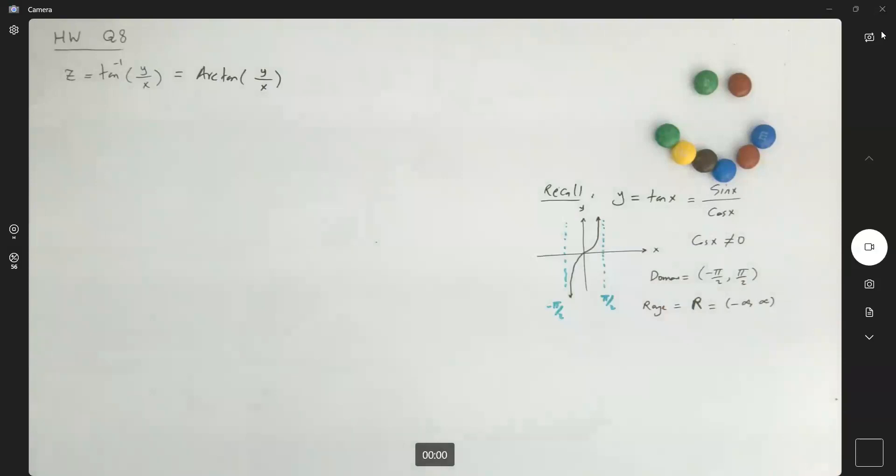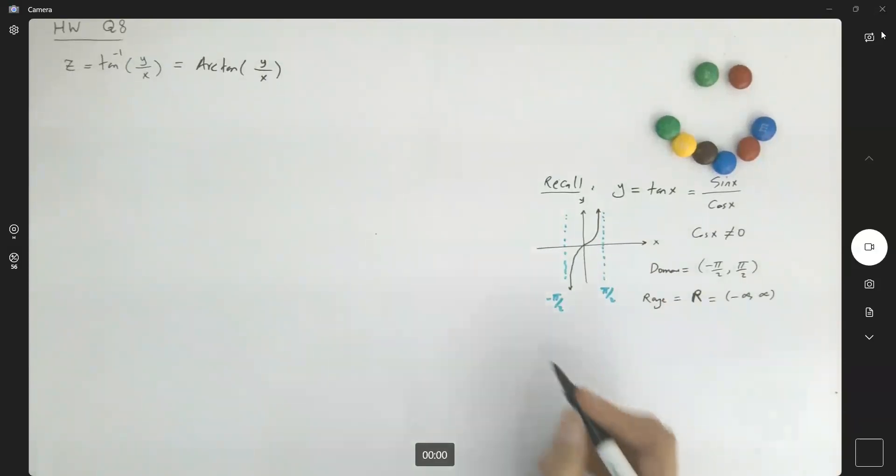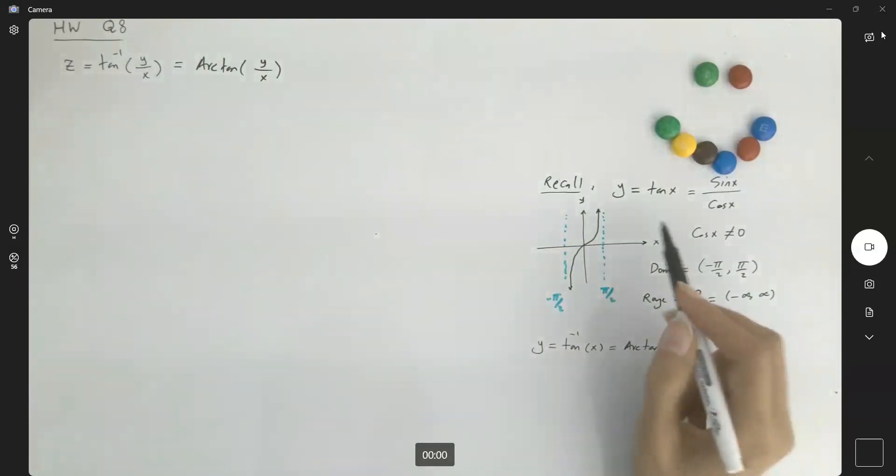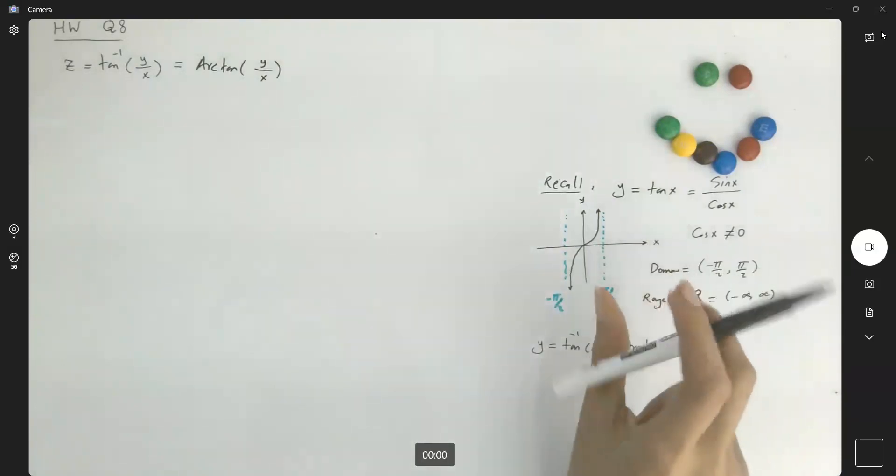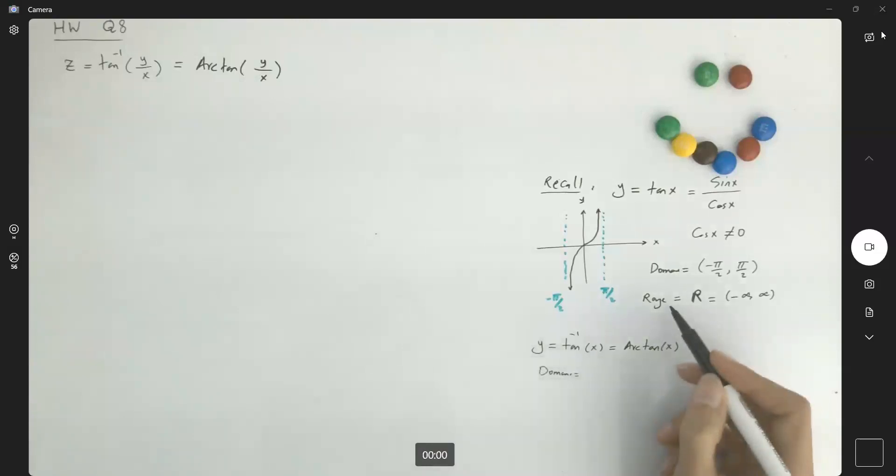The way that we define the inverse tangent, the inverse tangent or arc tangent is the inverse of this function with respect to the line y equals x. We'll just flip this graph. Now, the domain of this function is the same as the range of your tangent x.